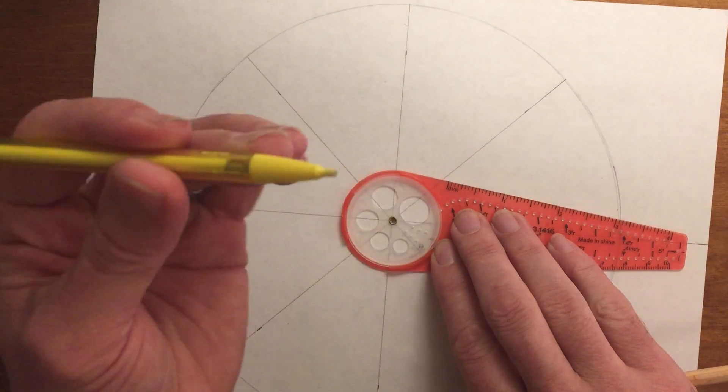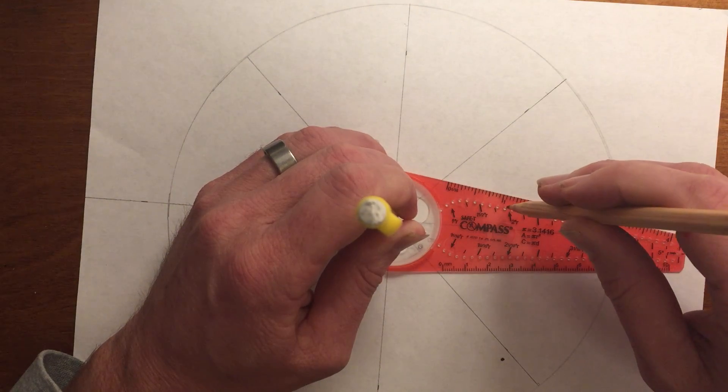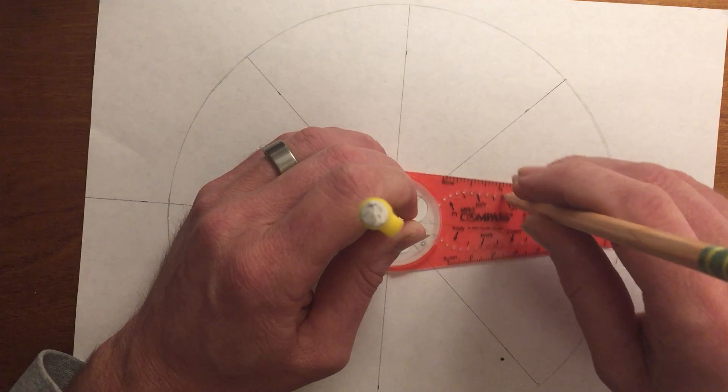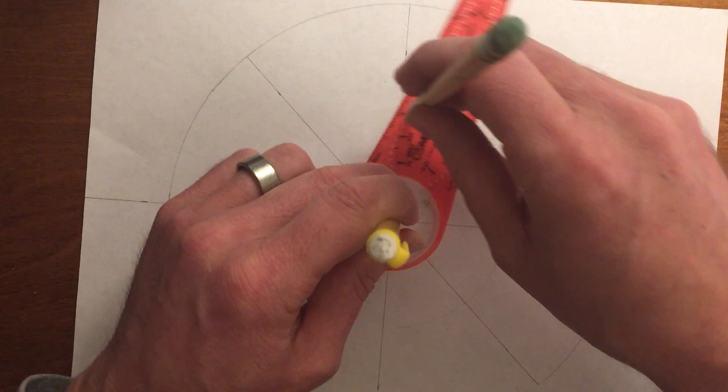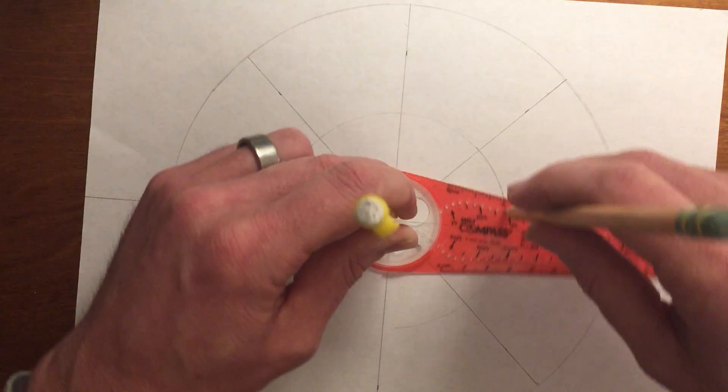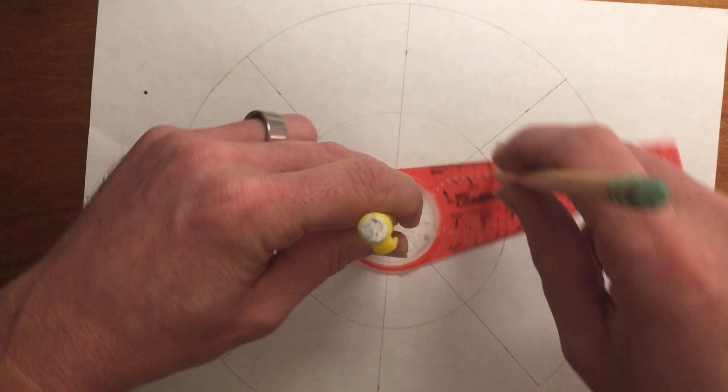I'm going to hold this down and find that little notch there. I'm going to create a very light circle here, very light, because I'm going to erase it when I'm done with it.